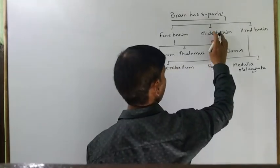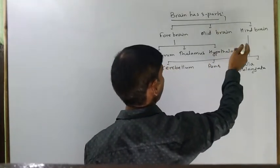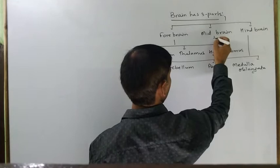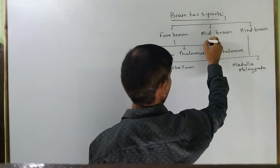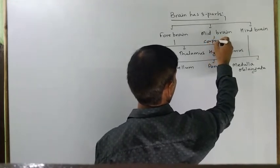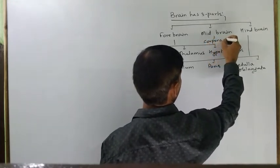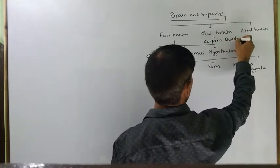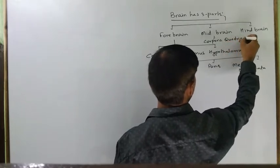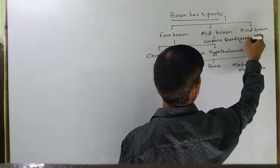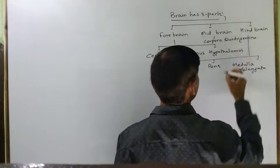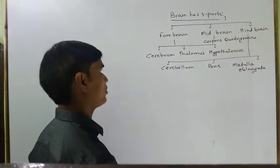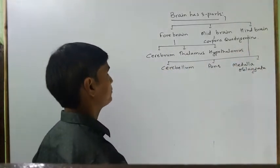जबकि यह जो Midbrain है, इसमें आएगा Corpora Quadrigemina, यानि इसके four optic lobes हैं।